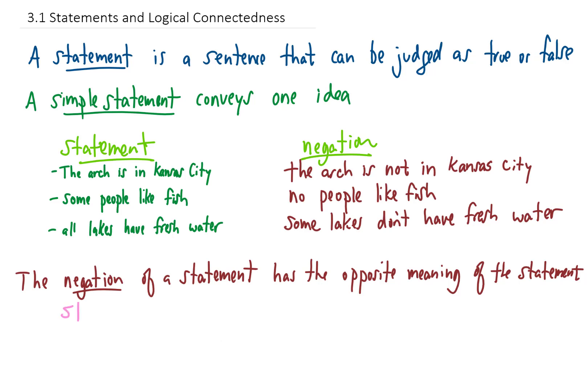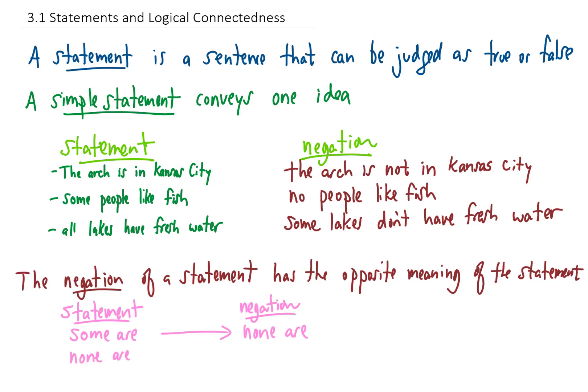So let's make some rules. If a statement has the words 'some are', then the negation will have the words 'none are' — for example, 'some people like fish' negates to 'no people like fish'. Next, if a statement has the words 'none are', the negation will have 'some are'. If the original statement was 'no people like fish', the negation would be 'some people like fish'.